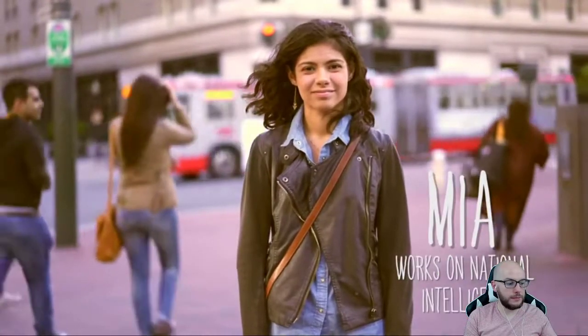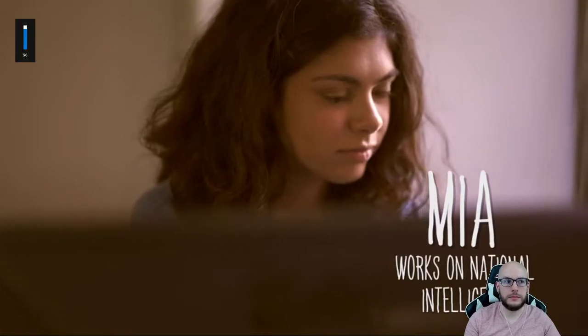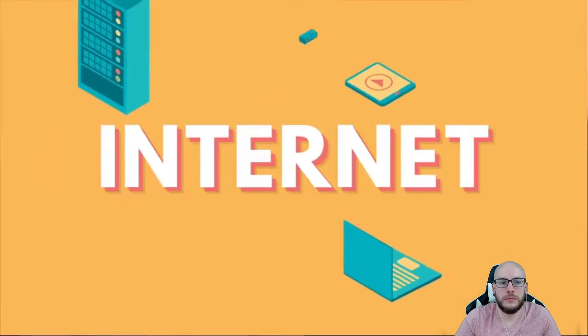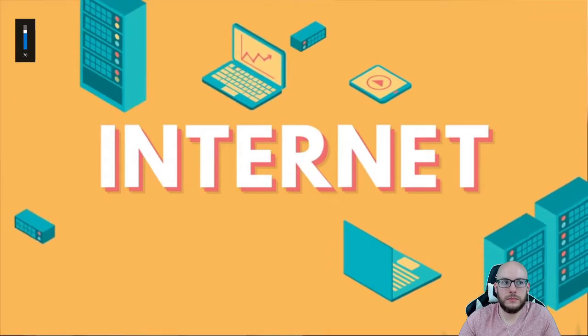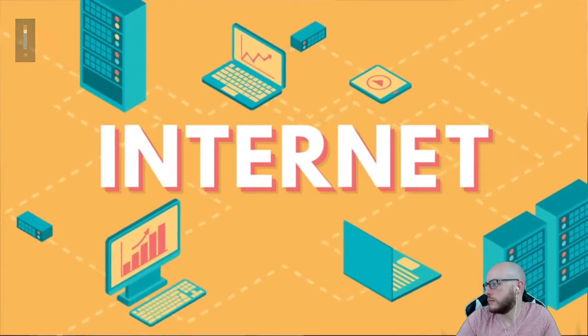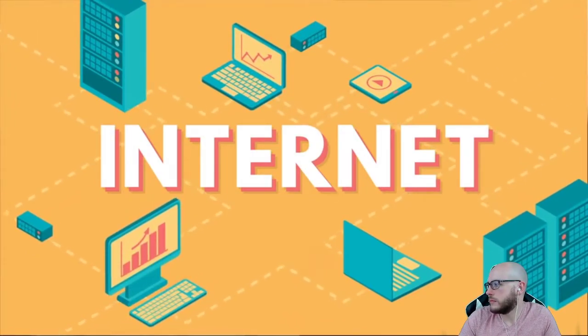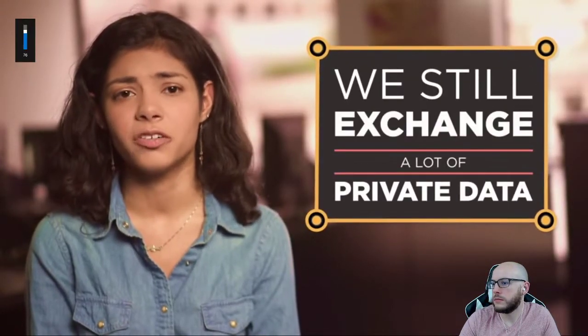Hi, my name is Mia Gill-Epner. I'm majoring in computer science at UC Berkeley, and I work for the Department of Defense where I try to keep information safe. The internet is an open and public system — we all send and receive information over shared wires and connections. But even though it's an open system, we still exchange a lot of private data: things like credit card numbers, bank information, passwords, and emails. So how is all this private stuff kept secret?